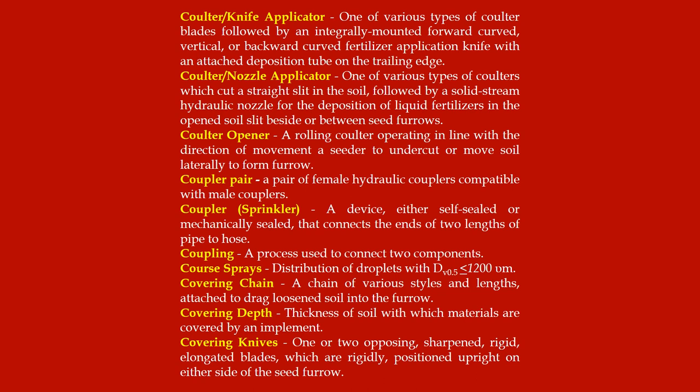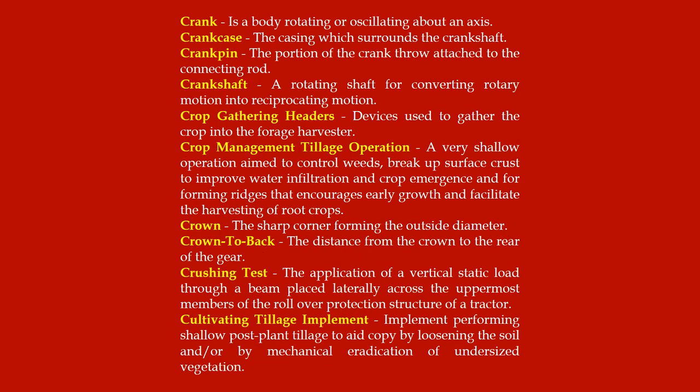Coarse sprays: distribution of droplets with DV 0.5 less than 1200 micrometers. Covering chain: a chain of various styles and lengths attached to drag loosened soil into the furrow. Covering depth: thickness of soil with which materials are covered by an implement. Covering knives: one or two opposing sharpened, elongated blades which are rigidly positioned upright on either side of the seed furrow.